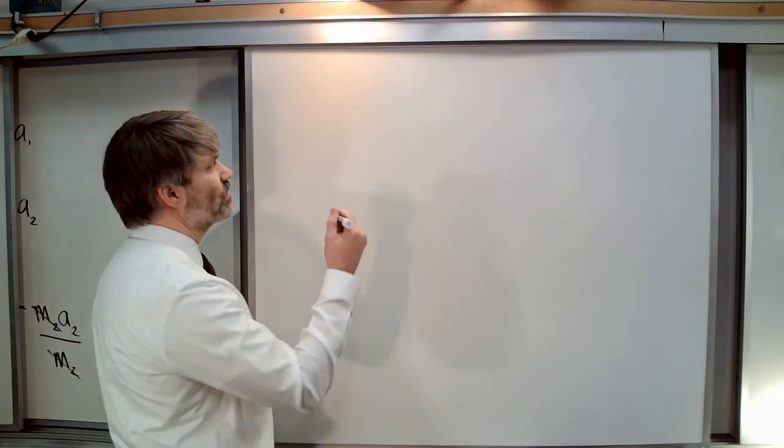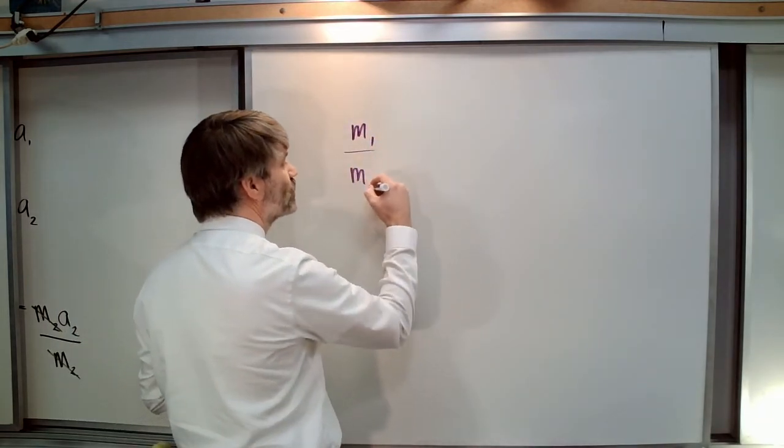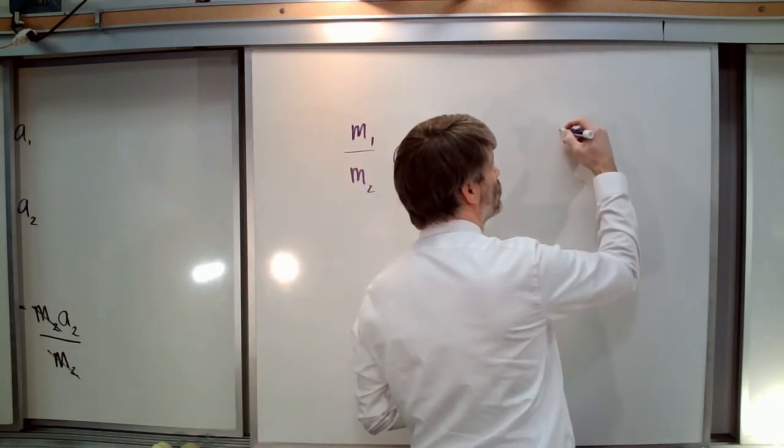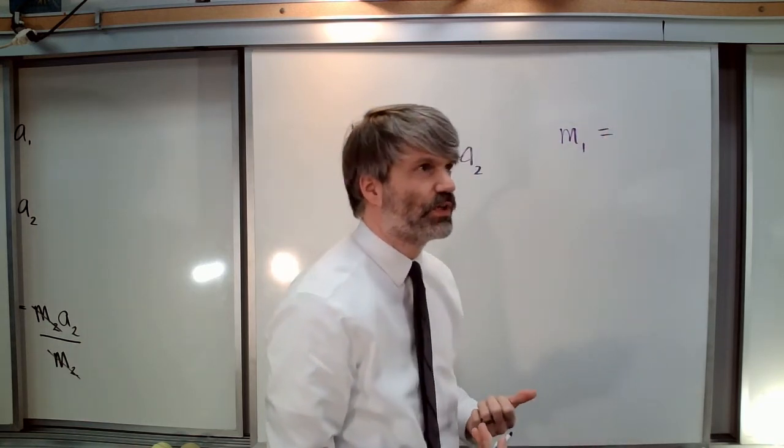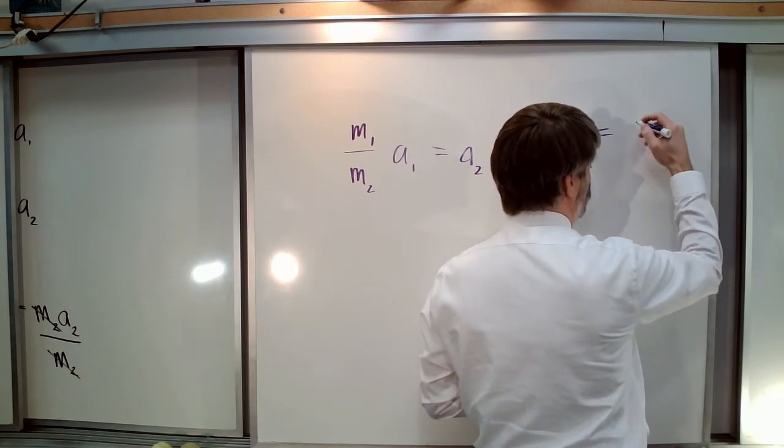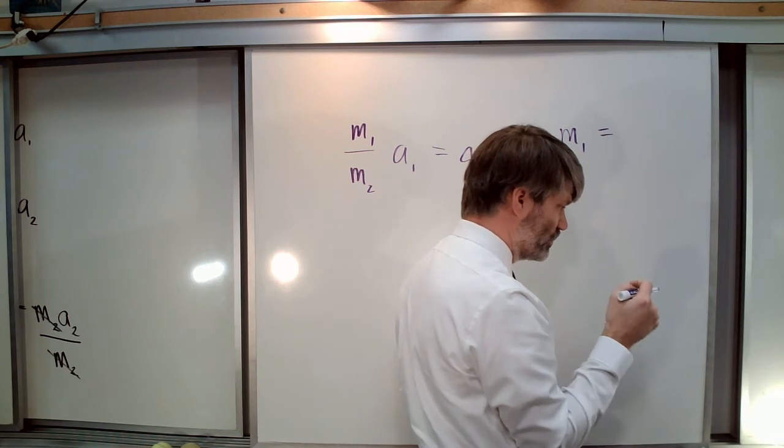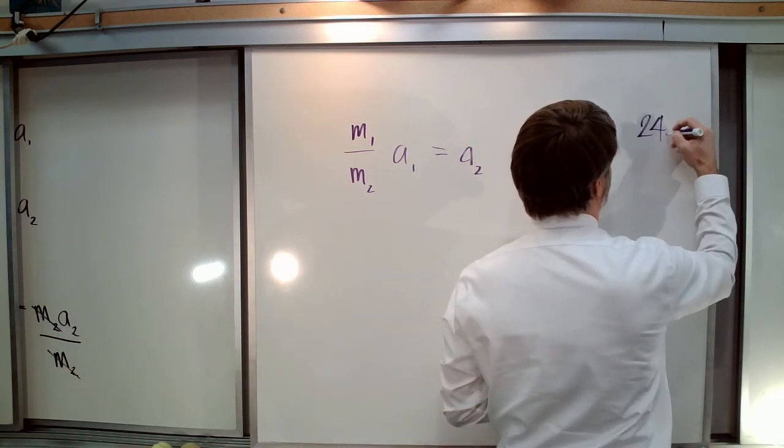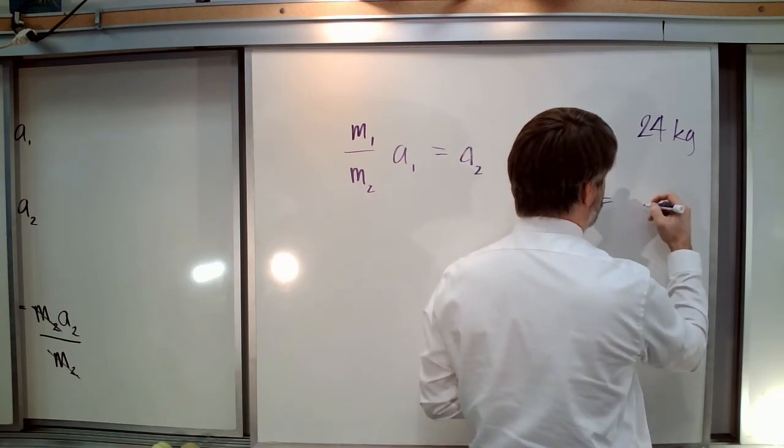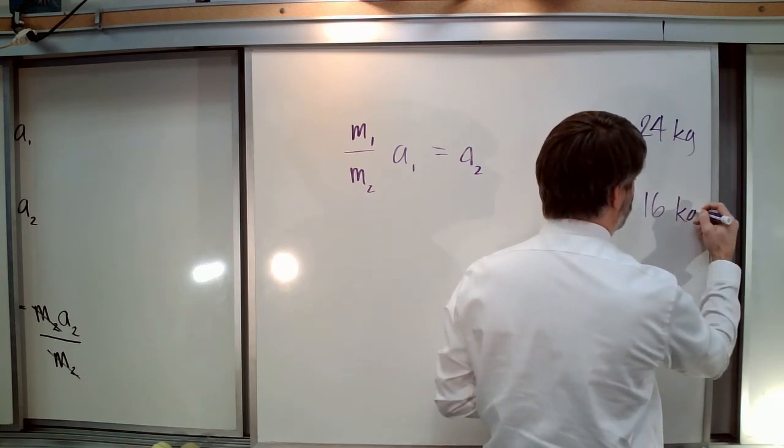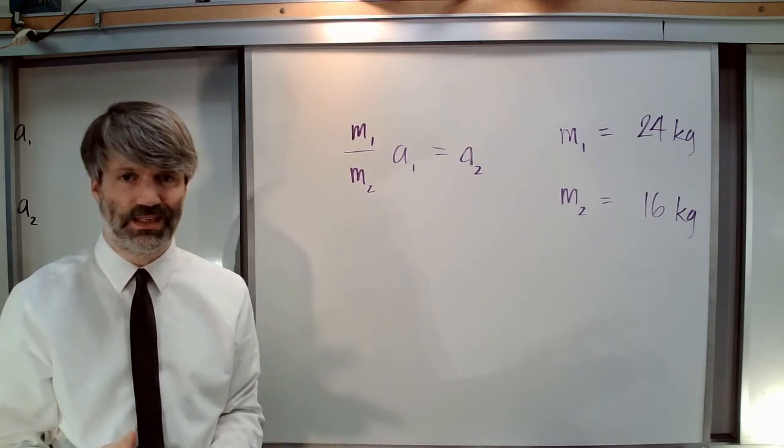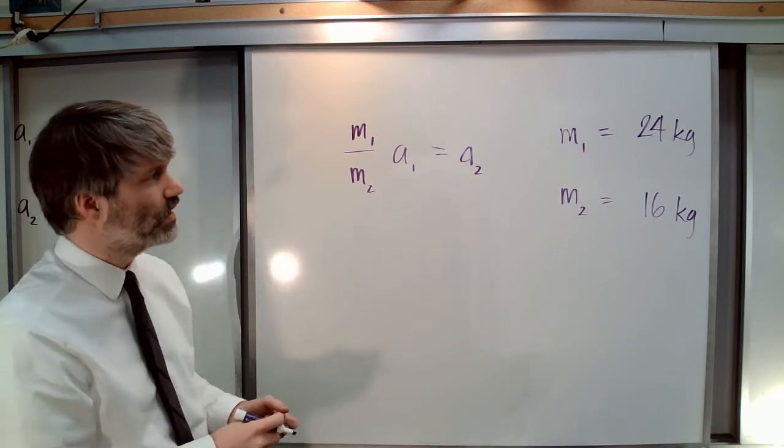Let's say M1 equals 24 kilograms and M2 equals 16 kilograms instead of six kilograms and four kilograms.